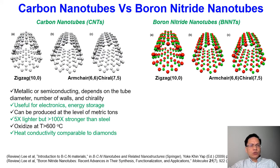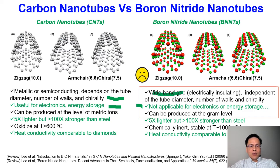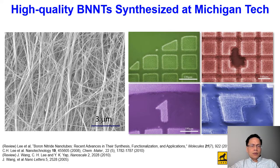There are differences between carbon nanotubes and boron nitride nanotubes. Carbon nanotubes are metallic or semiconducting and they are useful for electronics and energy storage applications, whereas boron nitride nanotubes are wide bandgap and they are always electrically insulating. Therefore, they cannot be used for electronics applications. These are the disadvantages of boron nitride nanotubes.